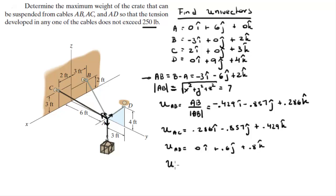For the unit vector of the crate, notice that it goes straight down, parallel to the k-axis, so it's simply -1 in the k direction.